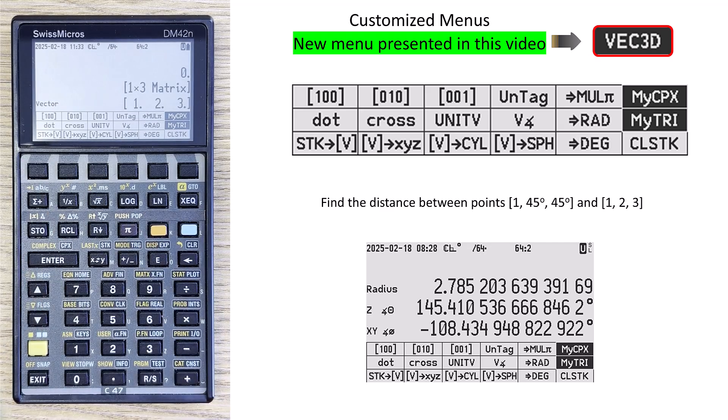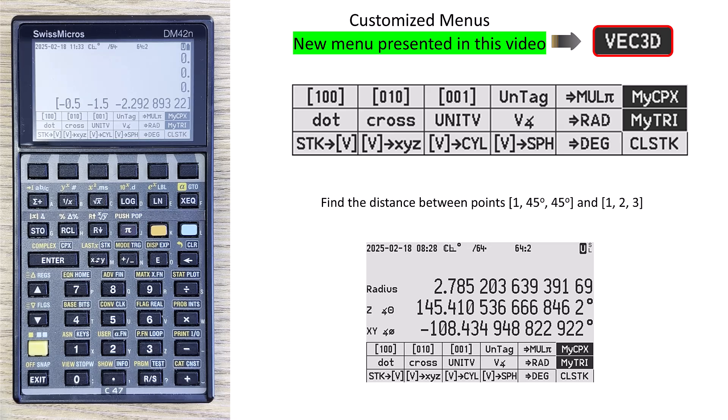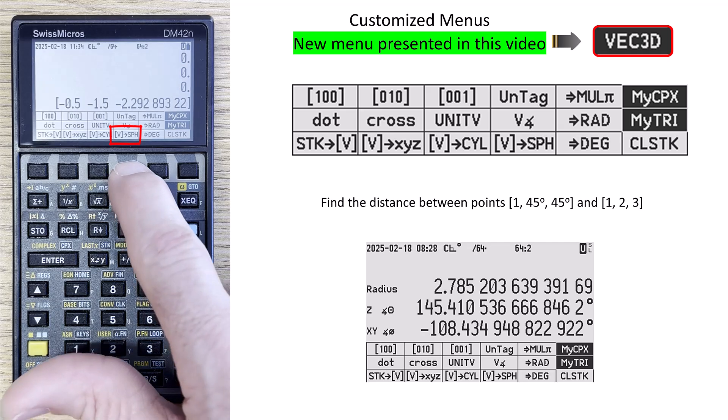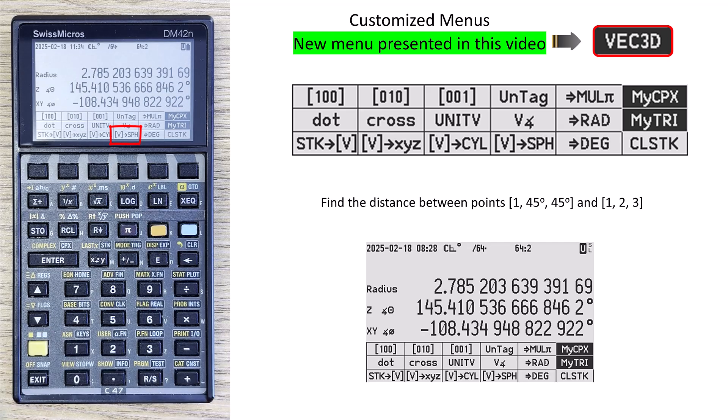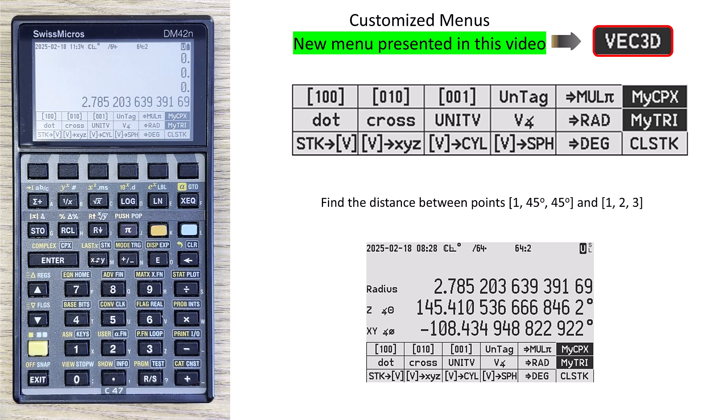And now, to find the distance between two points, I just subtract one vector from the other. Now, unfortunately, I don't have room left in this menu to do a distance. But I recognize that if I put the vector in spherical coordinates, then the R, or radius of the sphere, is the distance between the two points. So unfortunately, in this case, I'll just do roll down twice. But that is the distance between the two points, which I'm using spherical coordinates to give me that answer.